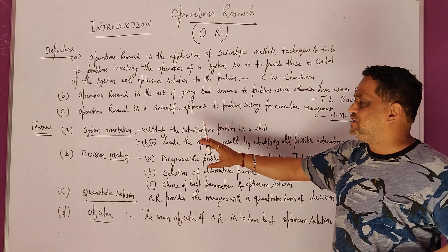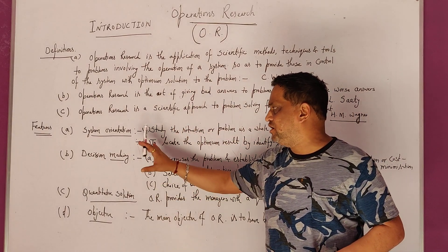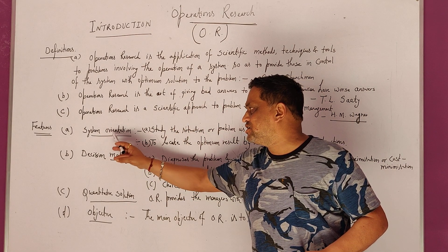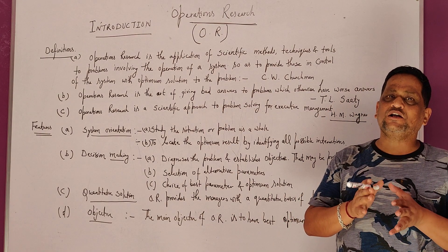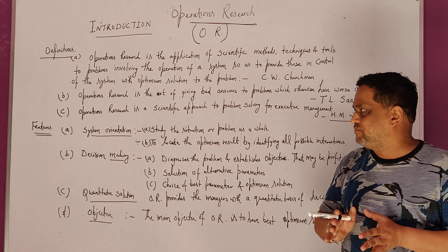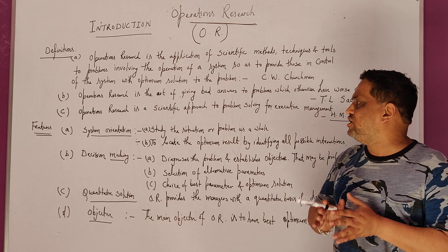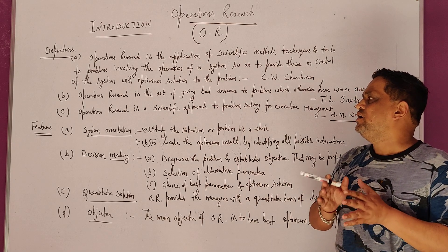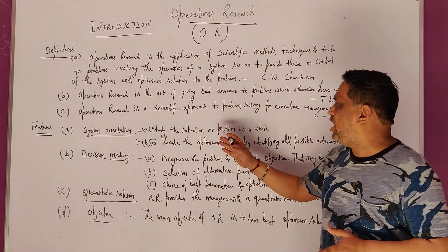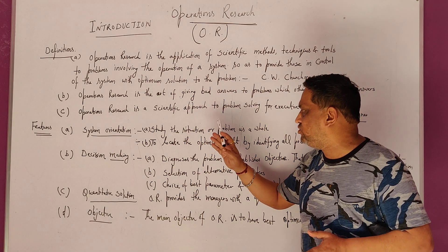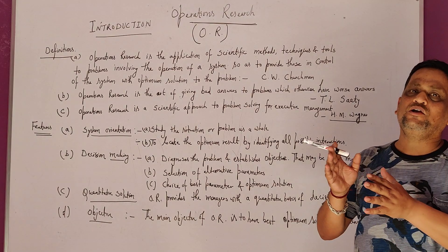Now we look at the main important features. We have four features. Number one is System Orientation. Operations Research is totally system oriented — it is based on a system. When we say it is based on a system, it means we have to include the study of the situation, based on some existing system.